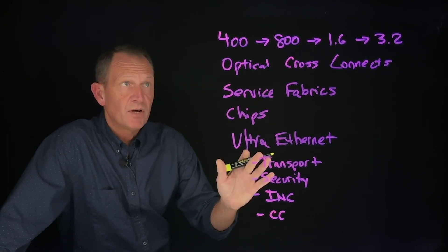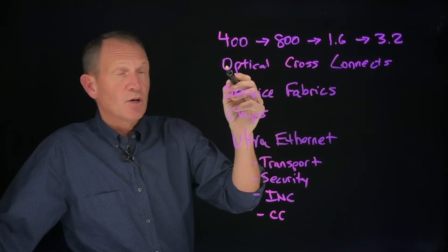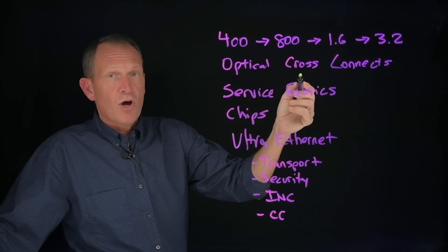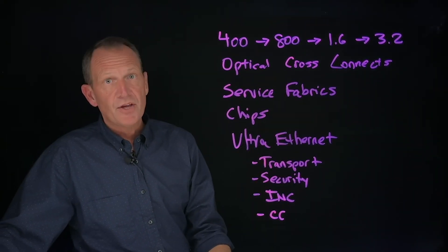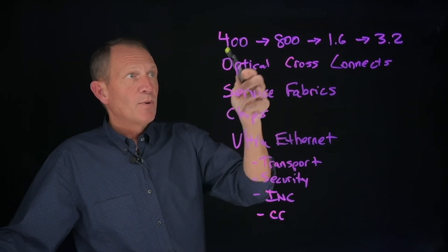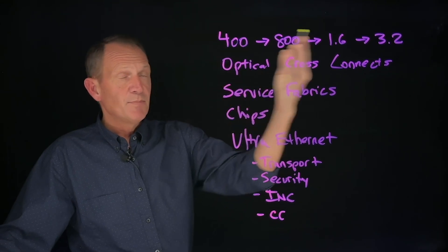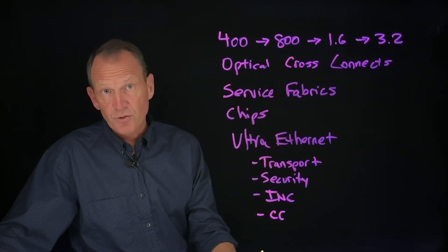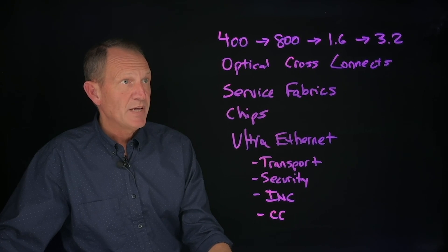First of all, let's start with improvements in Ethernet. As we know, we're at 400 today, moving to 800 quickly. Before long, we'll have 1.6 terabit and 3.2. The march of Ethernet continues on, and we will continue to take advantage of these greater speeds and build ever faster networks simply based on the natural progression of Ethernet as it continues to increase in speed.